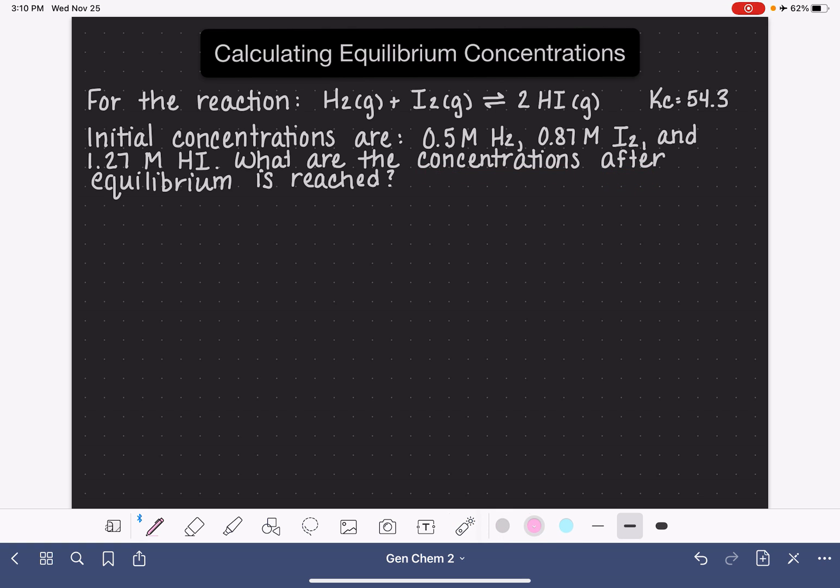We're going to be using a resource or a tool that is called an ICE table. To create an ICE table, you're going to rewrite the balanced chemical equation. You don't need to include the states in this equation, you just need to have it balanced. And we're going to make three rows that we label I, C, E, which is where this gets its name, ICE table.